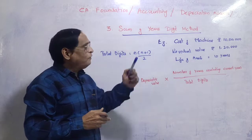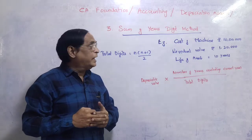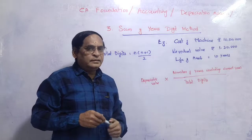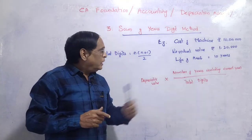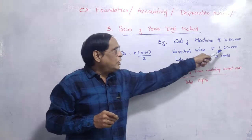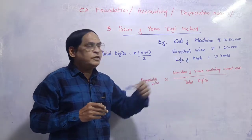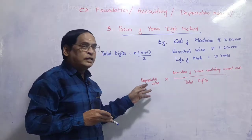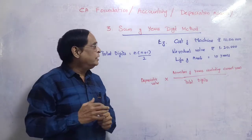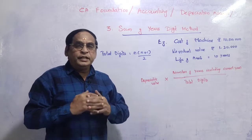The next method is the Sum of Years Digit method — a slight variation. For example: cost of the machine is 10 lakhs, residual value is 1 lakh 20,000, and life of the machine is 10 years. The depreciable value is cost of machine minus residual value — that is 10 lakhs minus 1 lakh 20,000, which equals 8 lakhs 80,000.